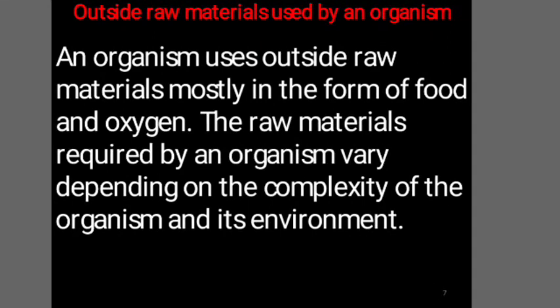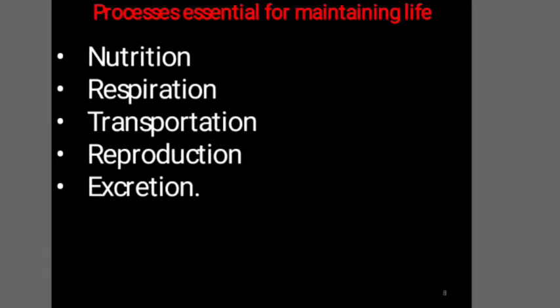An organism uses outside raw materials, mostly in the form of food and oxygen. The raw materials required by an organism vary depending on the complexity of the organism and its environment. In this chapter we are learning four important life processes: nutrition, respiration, transportation, and excretion. The reproduction life process will be learned later in a separate chapter.